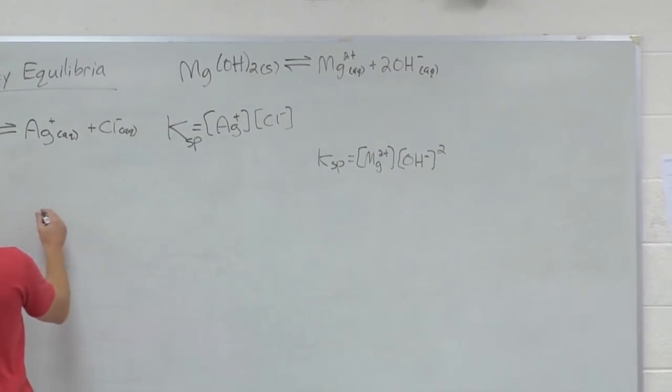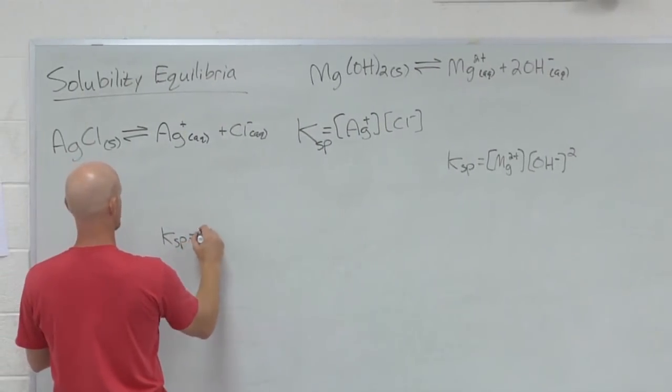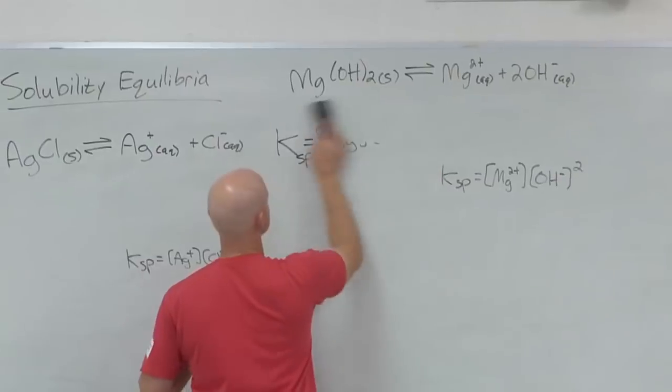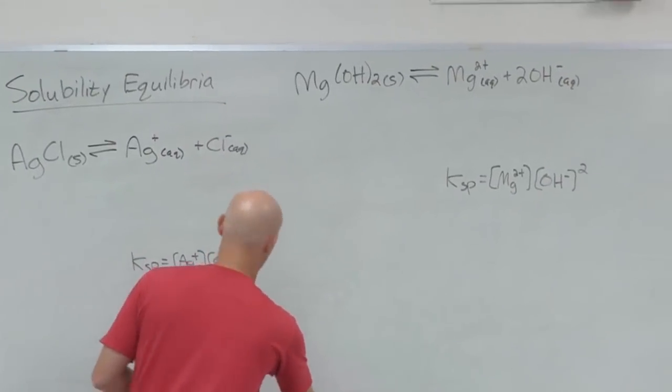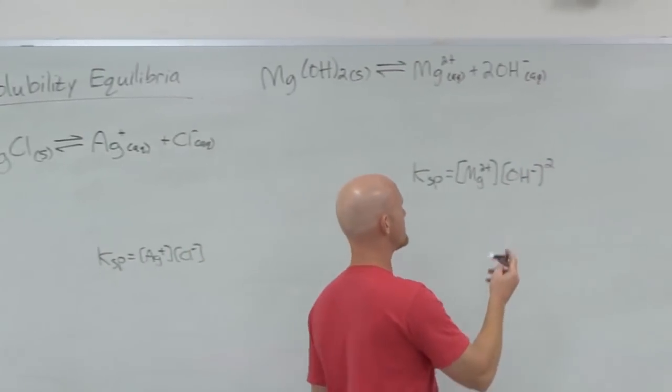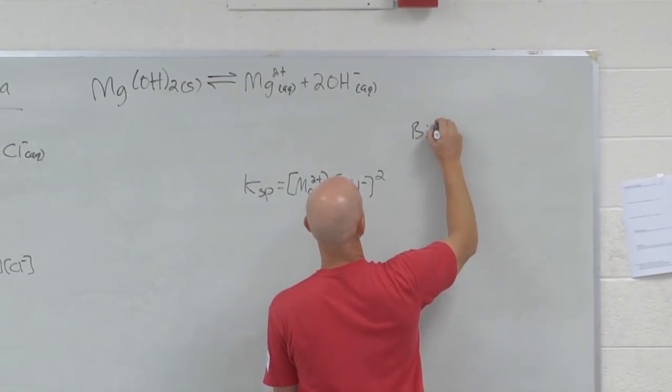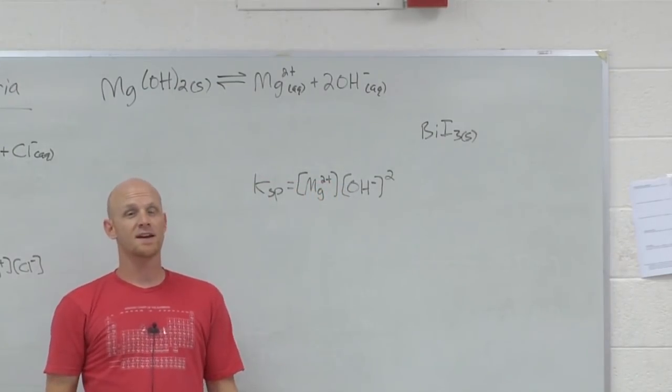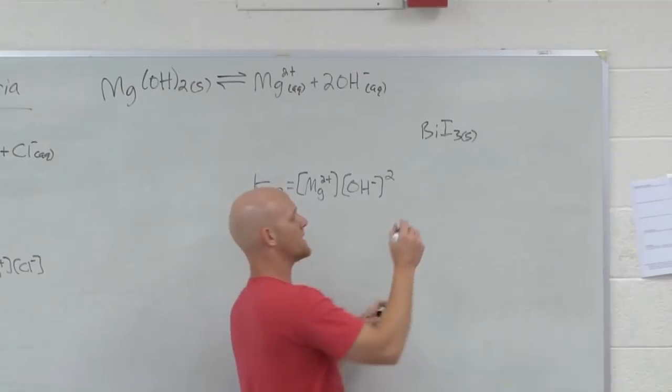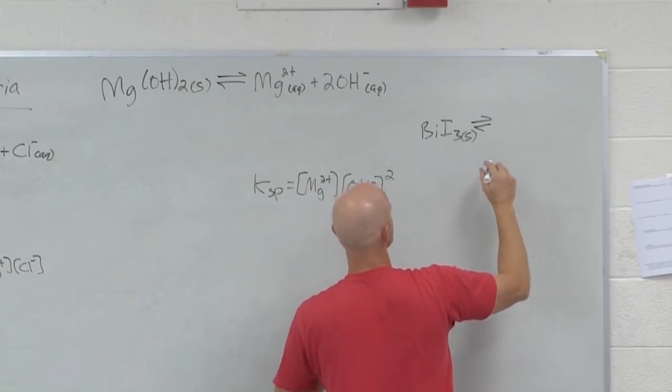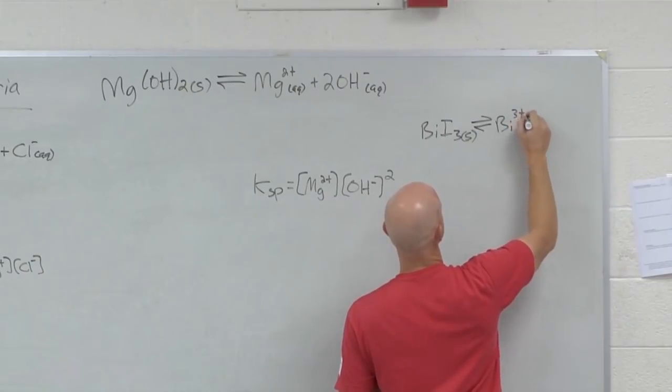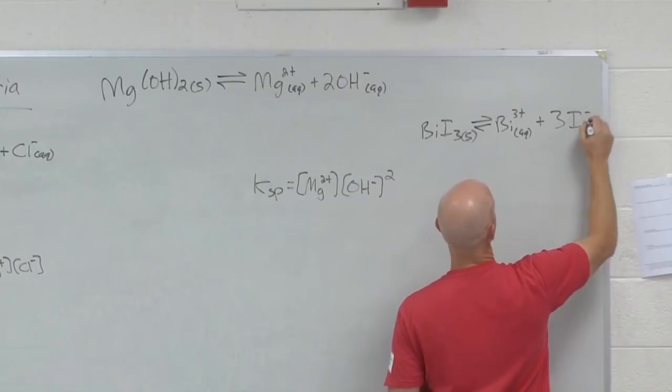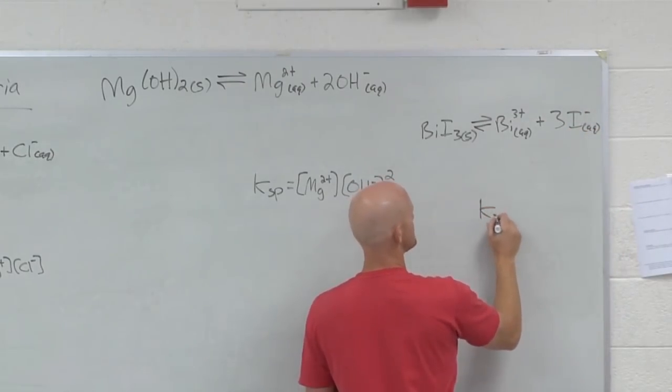Cool. I'm going to rewrite the Ksp for AgCl over here real quick just to kind of save a little room. Cool. Well, let's do it for one more. What about for bismuth iodide? If I was talking about the Ksp reaction, I would know the solid is the reactant. And what ions does it break up or dissociate into? So bismuth ions and three iodide ions.